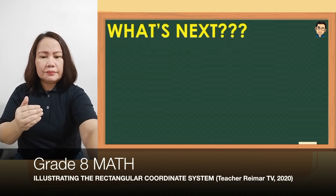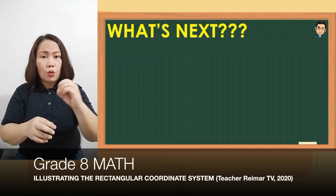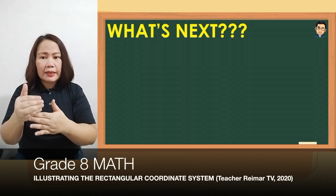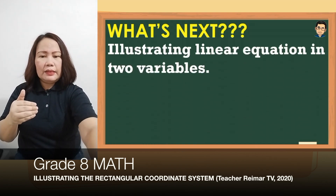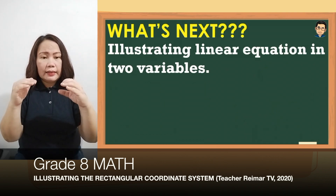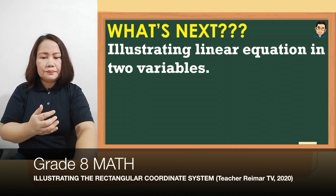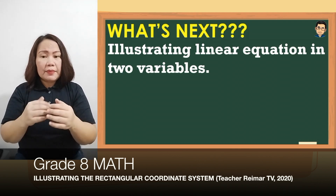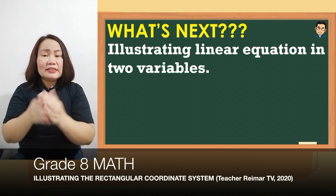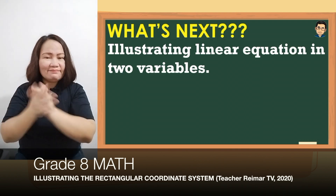After nating i-introduce yung rectangular coordinate system at the same time mag-plot tayo ng mga points, our next lesson will be illustrating linear equation in 2 variables. Na-introduce na sa inyo yung linear equation in 1 variable nung grade 7, so ngayon 2 variables naman po ang ating gagamitin — variable x and y. Yun lang, sana may natutunan kayo dito sa video na ito. Maraming salamat.